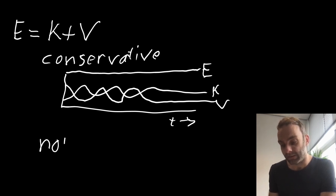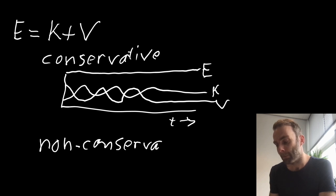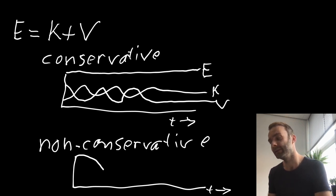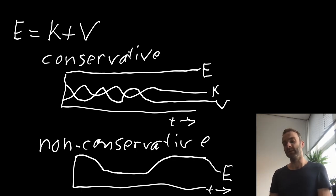On the other hand, non-conservative systems, if there you plot the energies over time, you might see that the total energy is lost due to damping forces or friction forces or drag, for example, or that if a motor is applied at some point, the total energy in the system goes up again and you see fluctuations in this total energy.